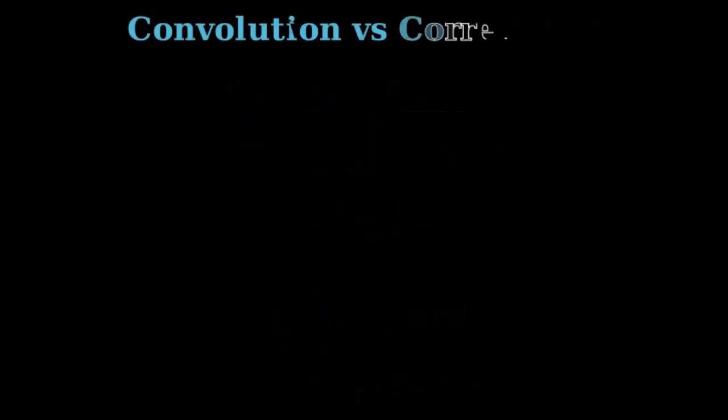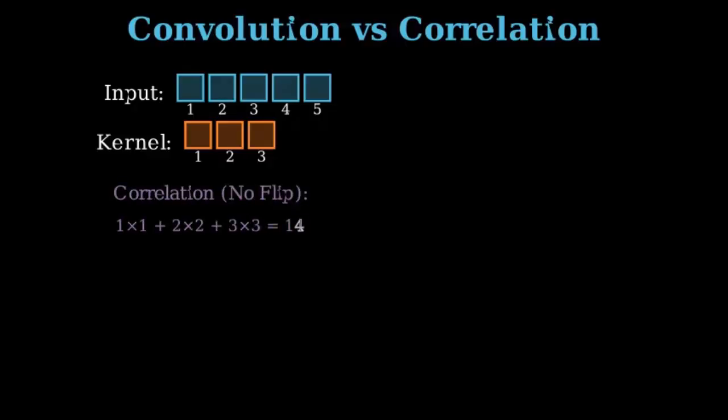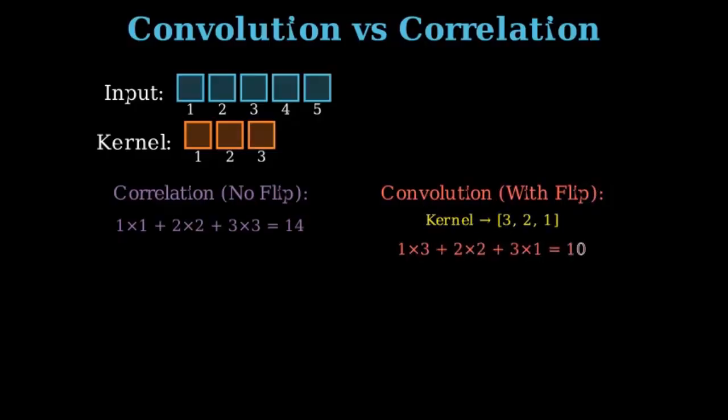Before we proceed, let's address a key technical point that can sometimes confuse people in the deep learning world, which is the difference between convolution and cross-correlation. We have an input sequence and a non-symmetric kernel with values 1, 2, 3. How would the first calculation look? 1 times 1 plus 2 times 2 plus 3 times 3, the output is 14. However, the true mathematical definition of convolution requires one extra step, which is the kernel must be flipped before sliding.